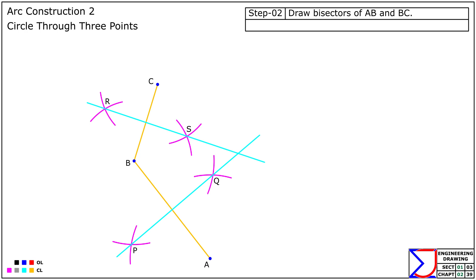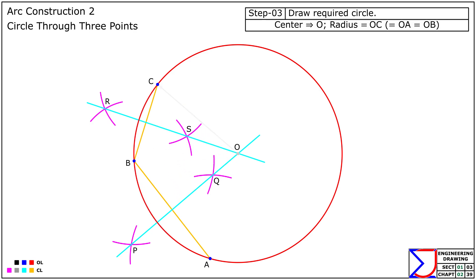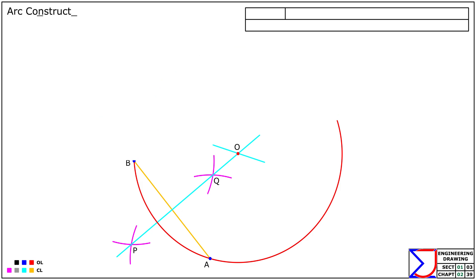The intersection of these two bisectors is the center of the circle, which we will call point O. With O as the center and the radius equal to the distance from O to any of the three points — OA, OB, or OC — draw the required circle. This method ensures that the circle will pass through all three points accurately.